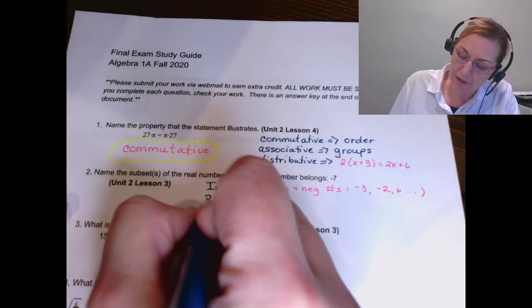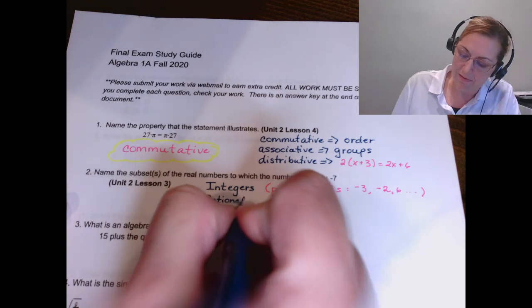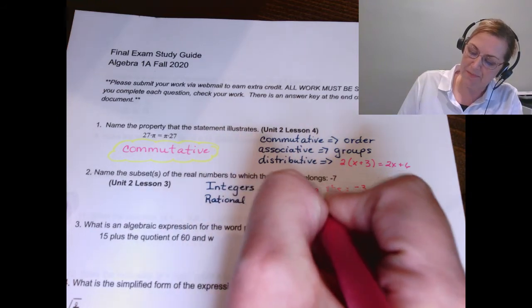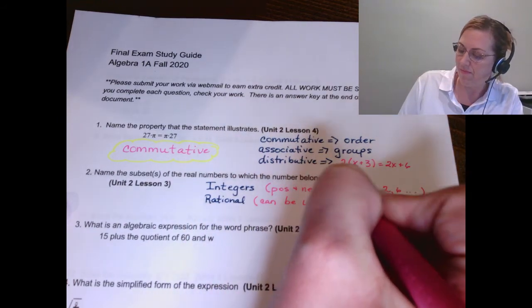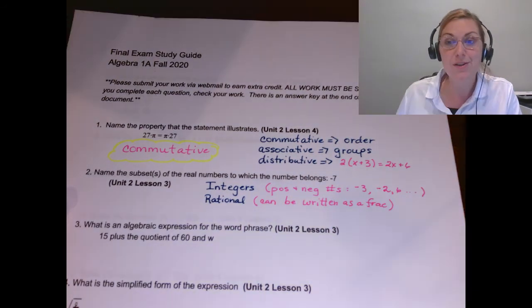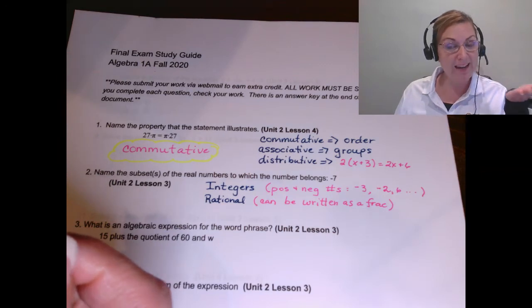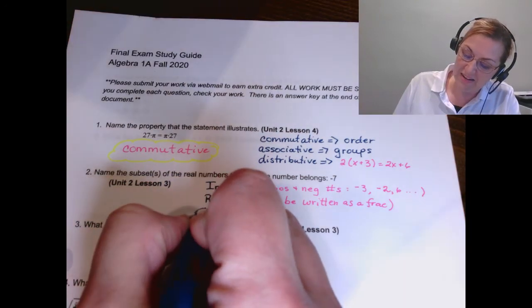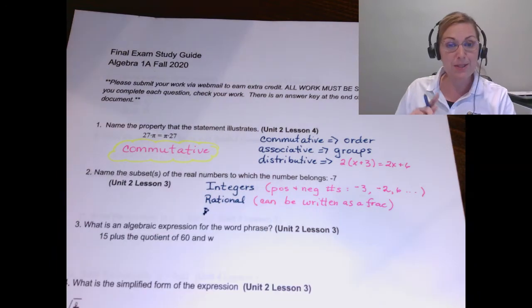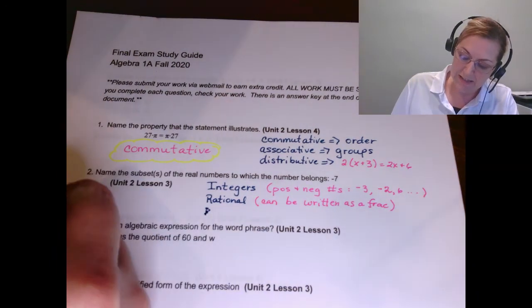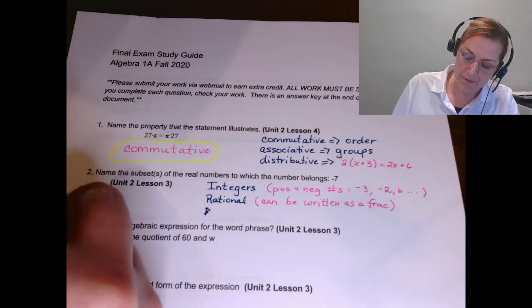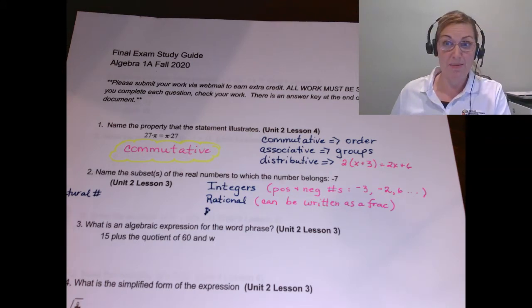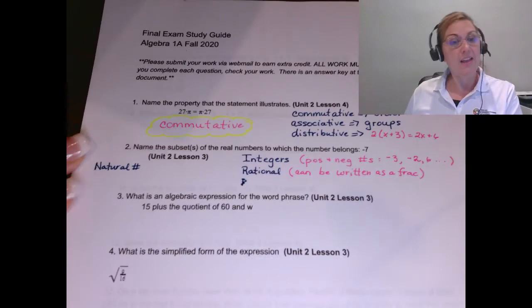Negative seven is also a rational number. It's a rational number, and these are numbers that can be written as a fraction. You may ask yourself, how is negative seven written as a fraction? I want you to think of negative seven over one. We can write any number as a fraction by putting it over one. And then finally, it is a real number, but we were just asking for the subsets. Now, let me also put a little note of the things it's not. It is not a natural number. Those are the numbers we teach little kids to count with. We teach babies one, two, three. Those are our natural numbers.